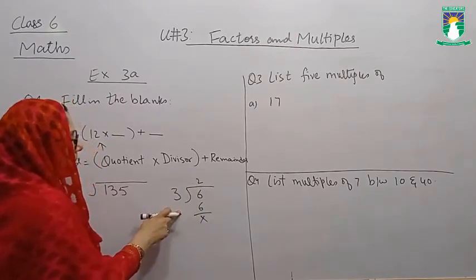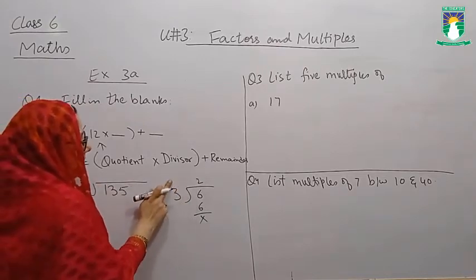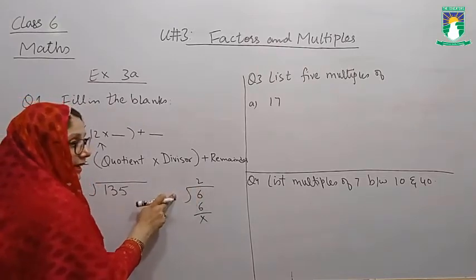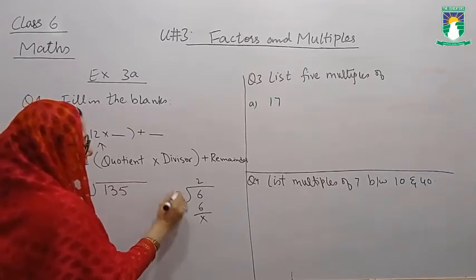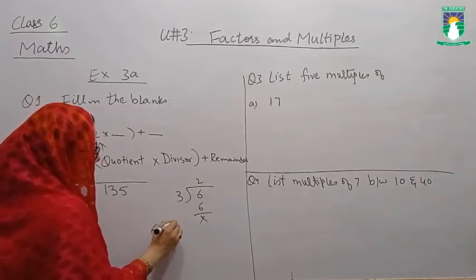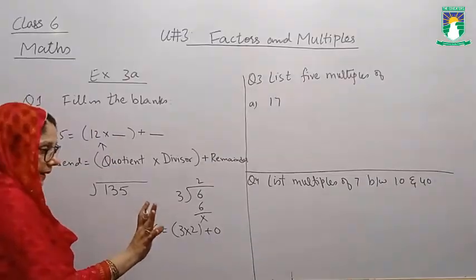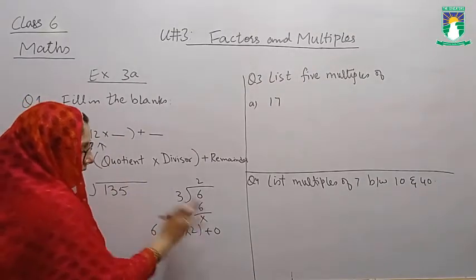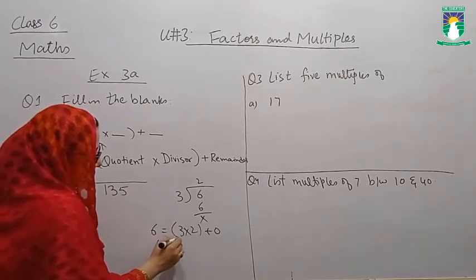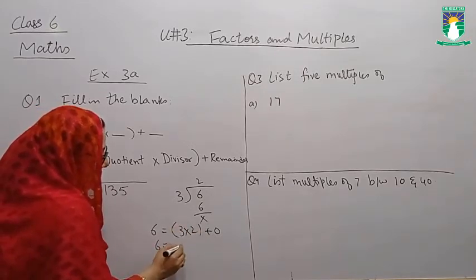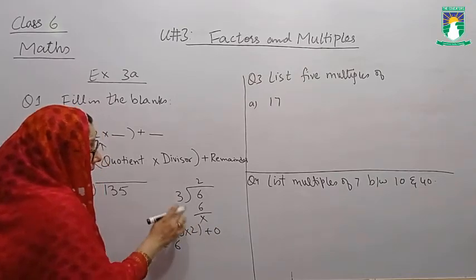If I have 6 divided by 2, the quotient is 3. Students, 3 multiplied by 2 equals 6. So 6 equals 3 times 2 plus 0, with remainder 0. 3 times 2 plus 0 equals 6.